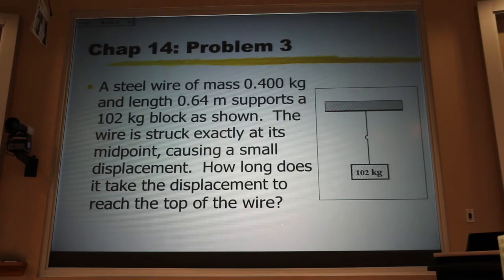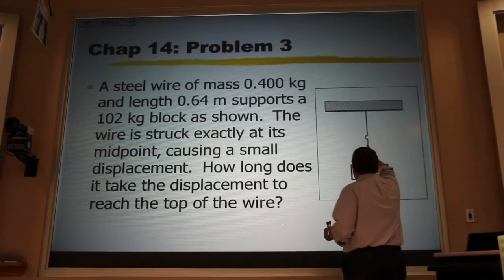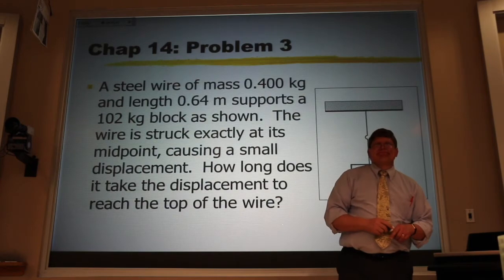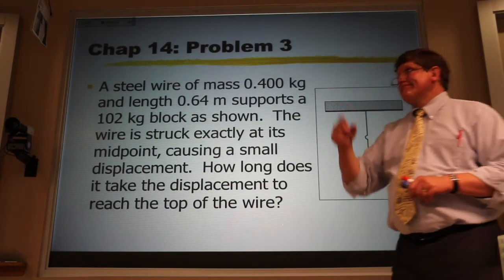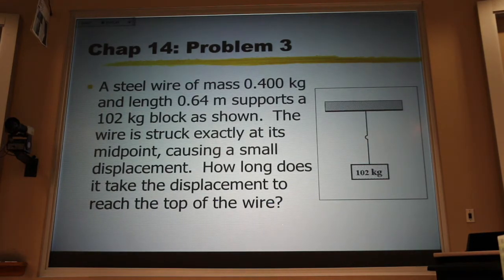You have a steel wire that is supporting this heavy block, and we pluck the wire in the middle, and we want to know how long it takes the pulse to reach the ceiling. Now, I've got a question. If I pluck it in the middle, why does that pulse go up instead of down? It goes both ways. Just like when you throw a rock in the pond, the disturbance goes in all directions. In this case, the only direction it can go is up and down. It goes both ways. But we're asked how long does the pulse that goes up take to reach the ceiling?